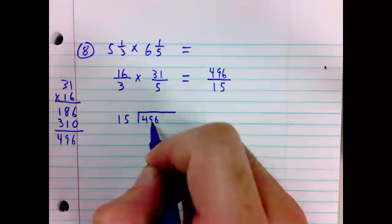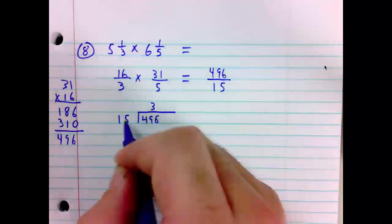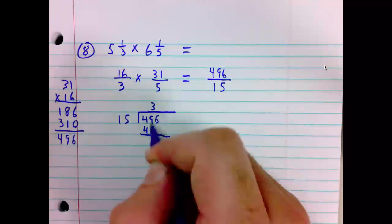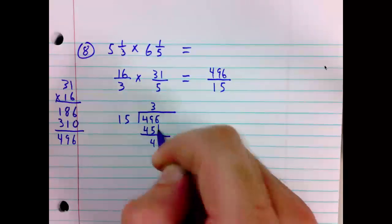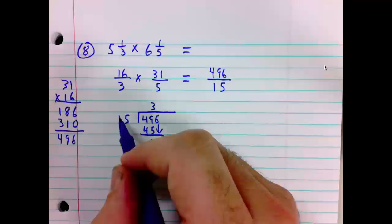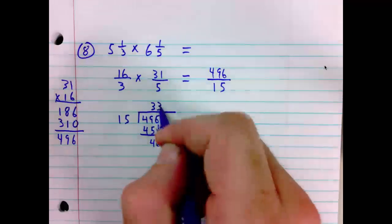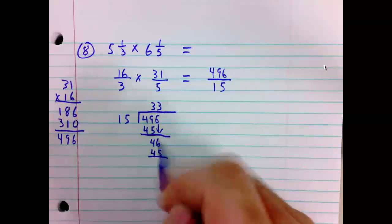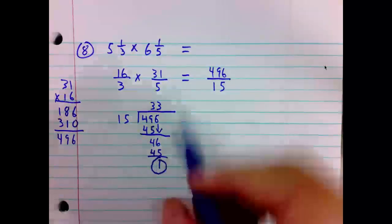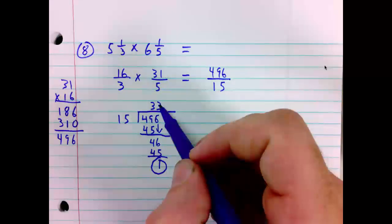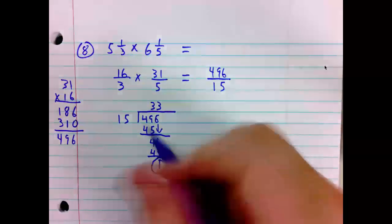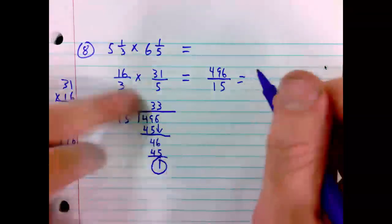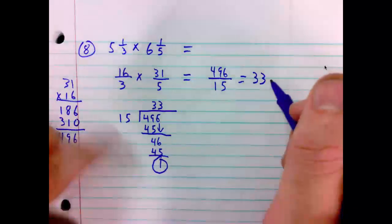15 into 49, 3 times. 3 times 15 is 45. Subtracting, 9 minus 5 is 4. Bring down the 6. 15 into 46, again, 3 times. 3 times 15 is 45. Subtracting is 1. This is the remainder. This is the whole portion. This is the remainder. This is the divisor. 496 over 15 is the same as 33 and 1 fifteenth.